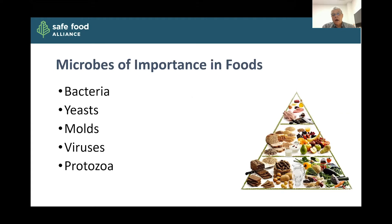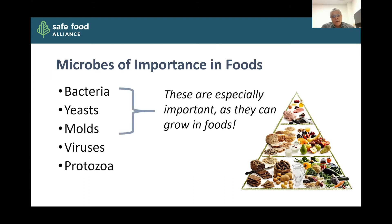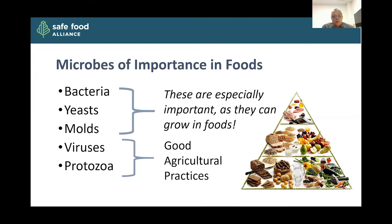What are some of the microbes of importance in foods? I've split these out into five basic categories: bacteria, yeasts, molds, viruses, and protozoa. Bacteria, yeasts, and molds are really important because they can grow in foods, so those are the organisms we'll spend a lot of time talking about today. We can modify conditions or impose practices to keep those organisms from growing where we don't want them. Viruses and protozoa can also cause illness in foods, but we control those mostly through good agricultural practices and preventing contamination of the crop.